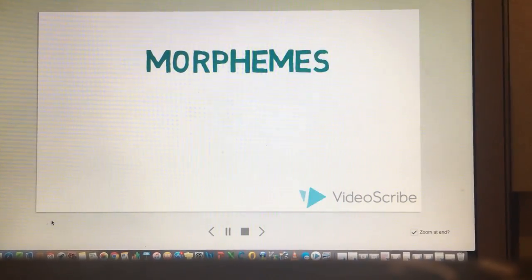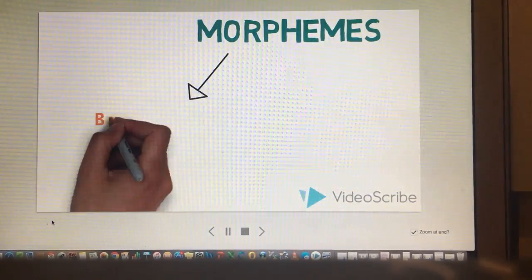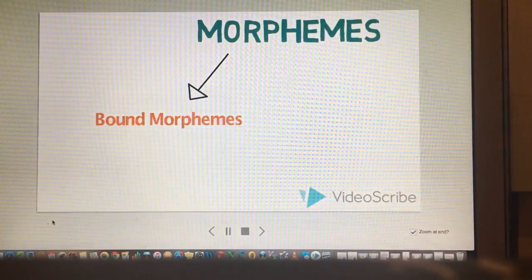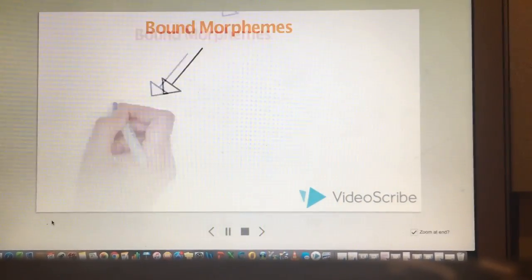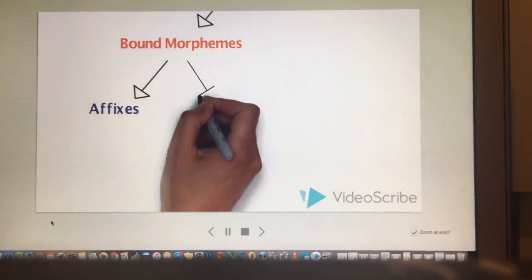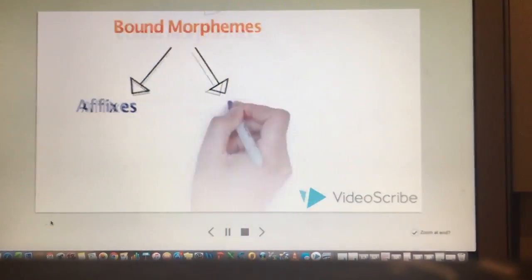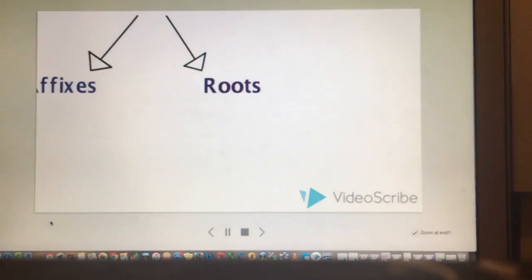A morpheme is a meaningful unit of language that cannot be further divided. First we have bound morphemes, which can further be divided into two categories: affixes and bound roots. Bound morphemes can also be seen as the root of a word. They are roots that cannot be used on their own.